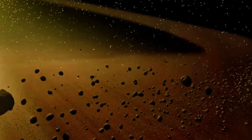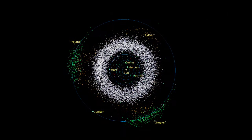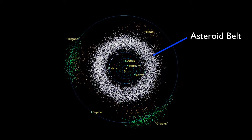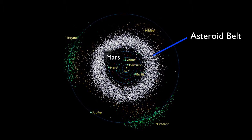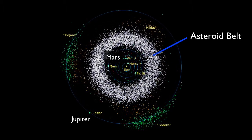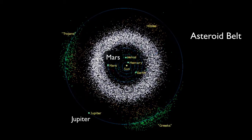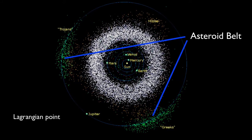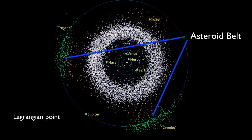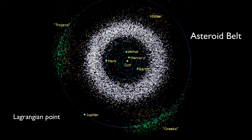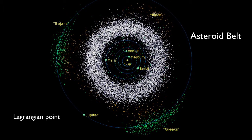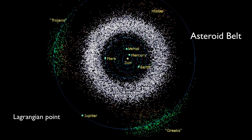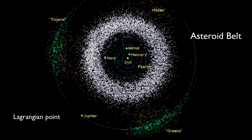For the inner solar system, there is the asteroid belt, which lies primarily between the orbits of Mars and Jupiter, but also within Jupiter's Lagrangian points. Recall from a previous lesson that a Lagrangian point is where the gravitational force of a planet is balanced by the gravitational force of the Sun.